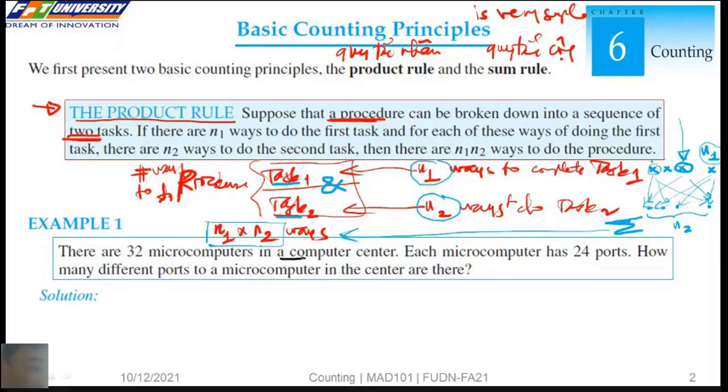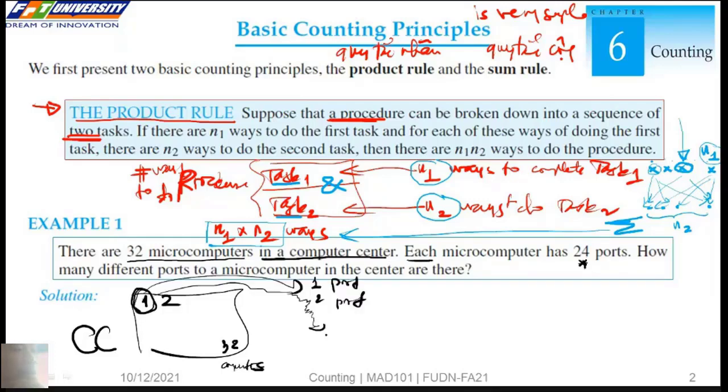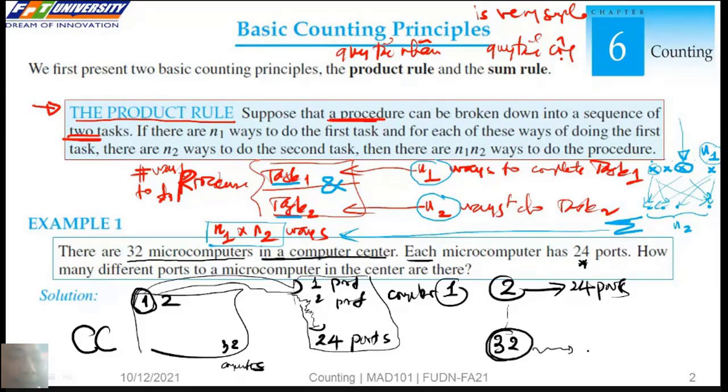In the computer center, we have 32 microcomputers. Eight microcomputers have 22 ports. Here are the ports for computer 1, for computer 2, we have also 22 ports, and the last computer also has 22 ports. So by the product rule, we have...